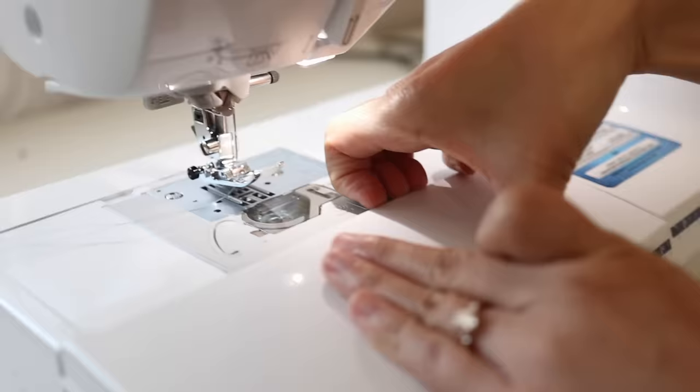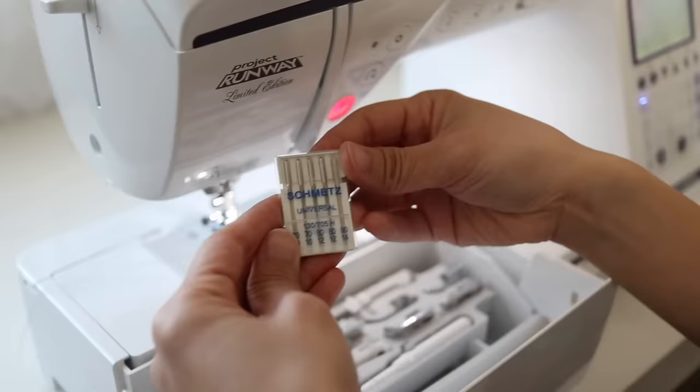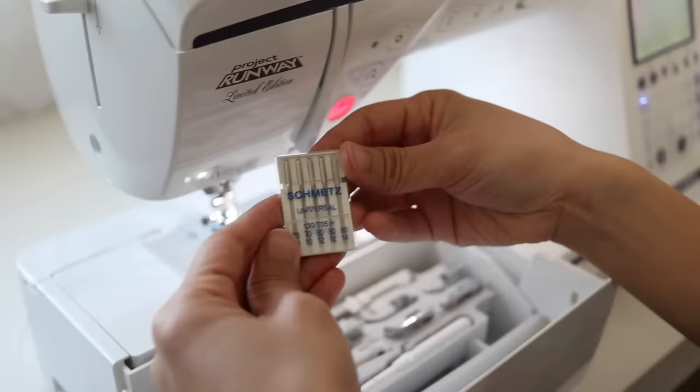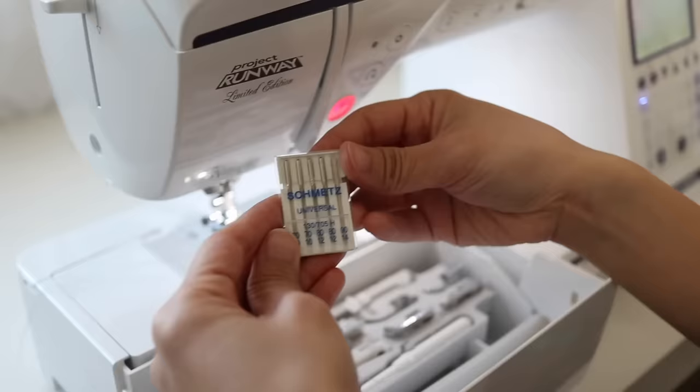Your machine should already come with a needle installed but if not, check to see if your machine has a compartment that holds extra needles, bobbins and sewing tools. If you run out of spare needles, you can purchase a pack of Schmetz Universal needles.